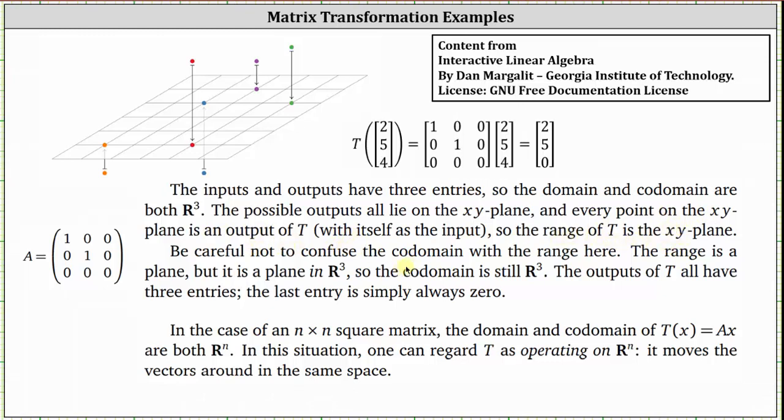Be careful not to confuse the co-domain with the range here. The range is a plane, but it is a plane in R3, so the co-domain is still R3. The outputs of t all have three entries. The last entry is simply zero.